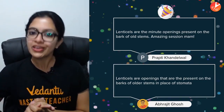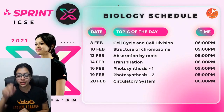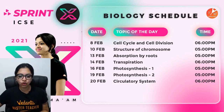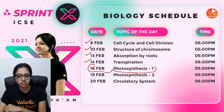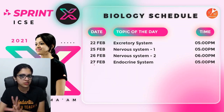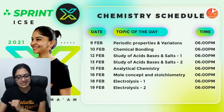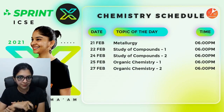Looking at the schedule — many sessions have already been done: cell cycle, cell division, chromosome structure, absorption by roots, and transpiration. We are right now on Photosynthesis Part 1. The biology schedule is going on till the 27th of February. Chemistry — Anubha ma'am's series is also already started and will continue till the 27th of February.